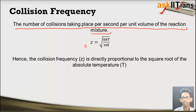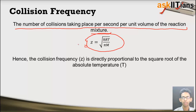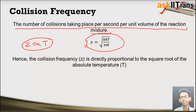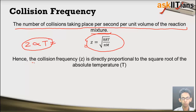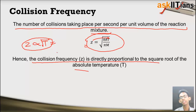Collision frequency is represented by Z, and the formula is Z is proportional to √(8RT/πM), where R is the universal gas constant, T is the absolute temperature, and M is the molar mass. From this expression we get that Z is directly proportional to the square root of the absolute temperature. So as we increase the temperature, the number of collisions between the molecules of reactants increases, and because of this there are greater chances for an increased rate of reaction. Collision frequency is directly proportional to the square root of the absolute temperature.